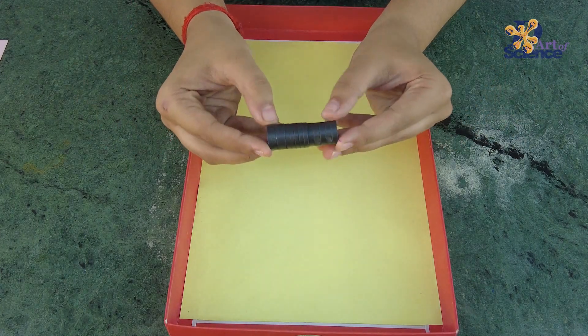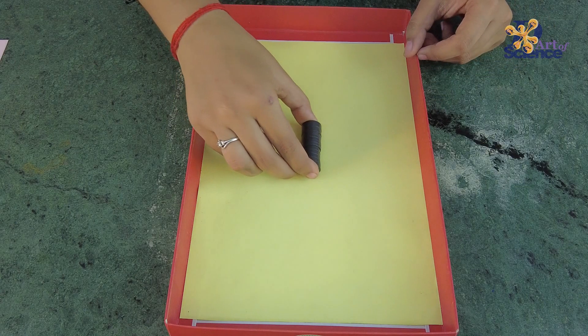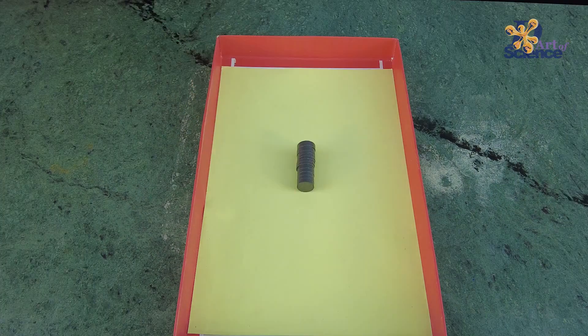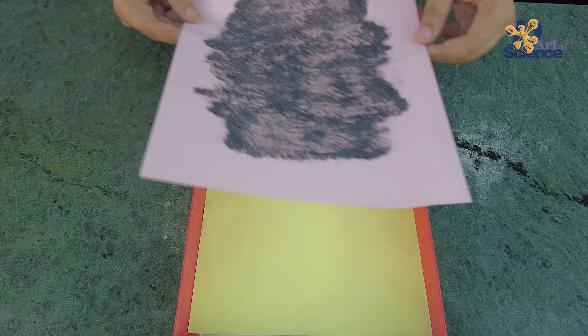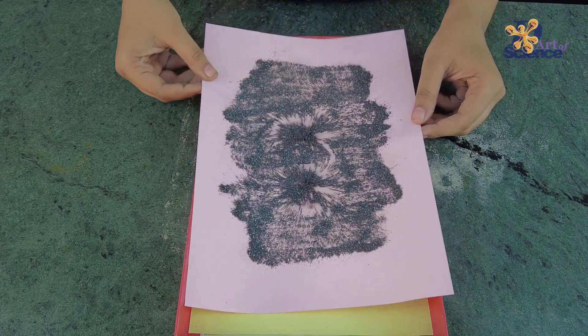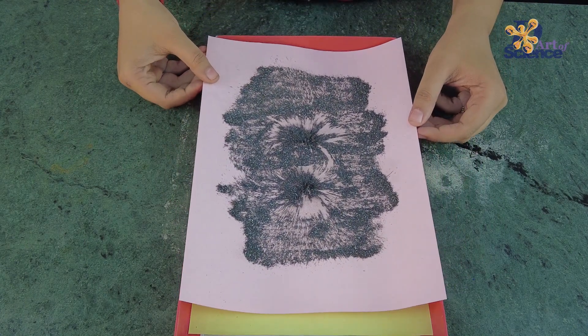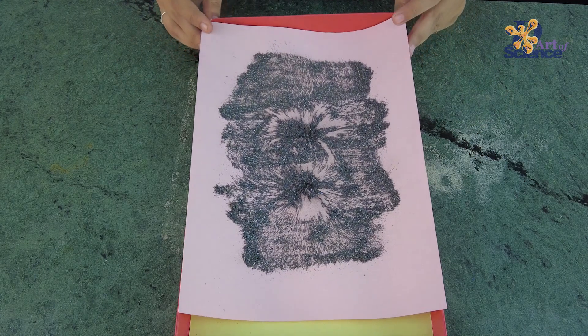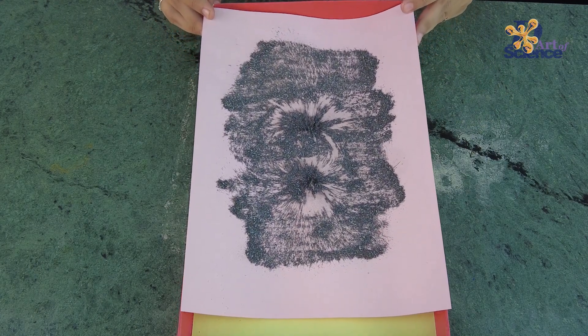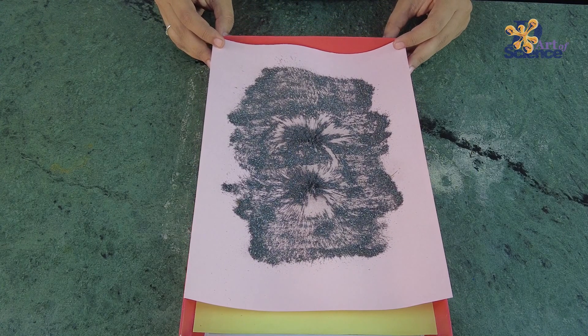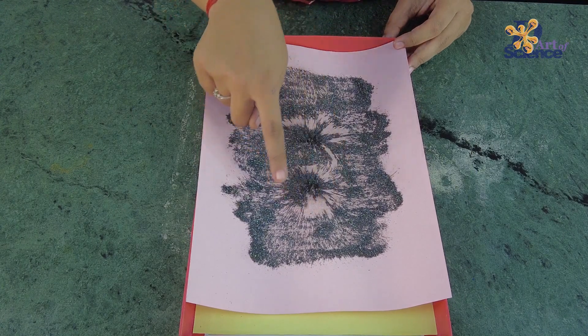Take some magnets and place them in the middle of the cardboard box. Next, take the paper with iron filings and place it gently on top of the cardboard. You will quickly realize that the iron filings make this really cool pattern and this is nothing but the field lines of a magnet.